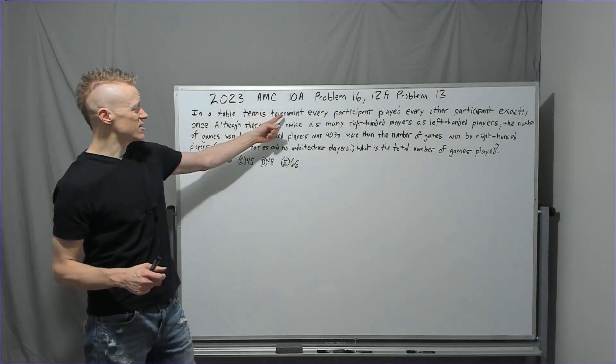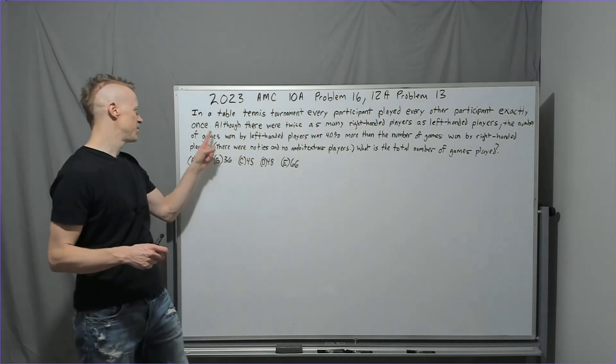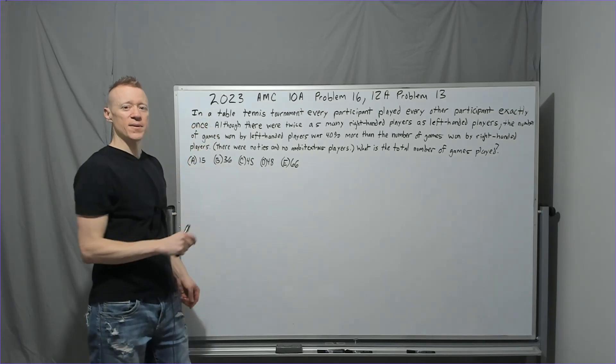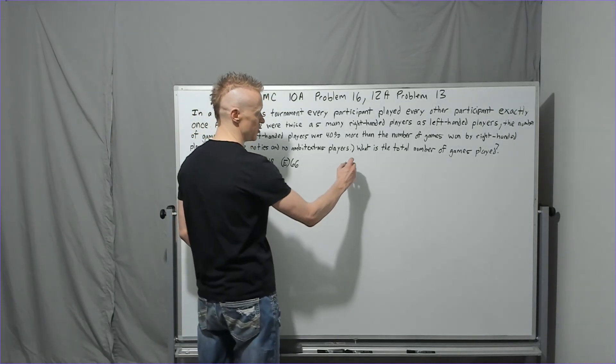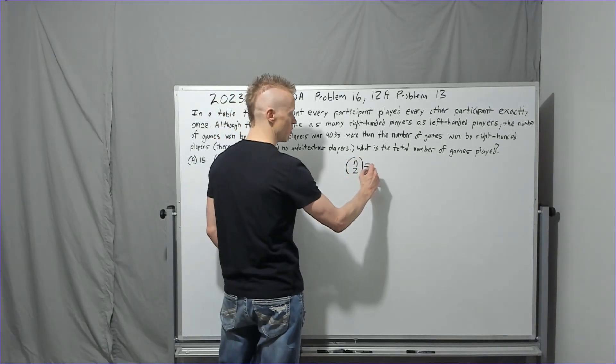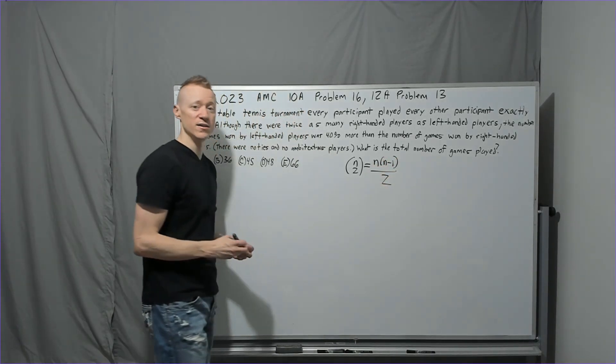In a table tennis tournament, every participant played every other participant exactly once. Right here, at this period, you should stop and think, what does that mean? It means, and you should have it, if you're experienced, you should know this is N choose 2. Furthermore, you should know the shortcut for the calculation of that is N times N minus 1 over 2.